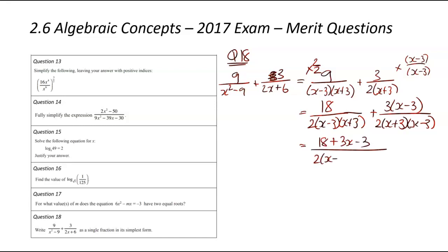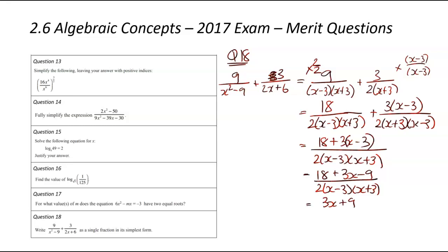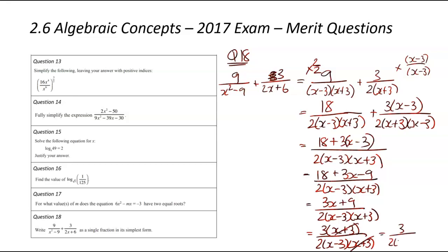Expanding the brackets on top: 18 plus 3x minus 9, with the denominator unchanged. Grouping the top together: 3x plus 9. Factorizing: there's a 3 in common, giving 3(x plus 3), all divided by 2(x minus 3)(x plus 3). The (x plus 3) terms cancel each other out, leaving 3 divided by 2(x minus 3). So that there is a single fraction in its simplest form.